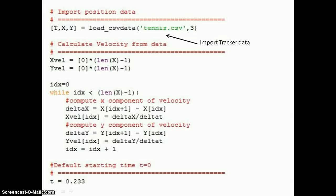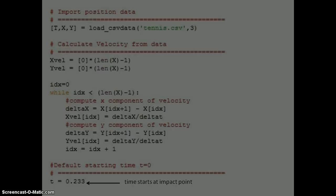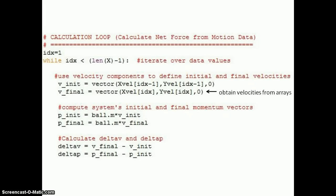Here I imported the data from Tracker. After initializing arrays, the data was put through a while loop to calculate the x and y components of velocity. Time starts at 0.233 seconds because that is the moment of impact. Another while loop is set up and here individual velocities are obtained.